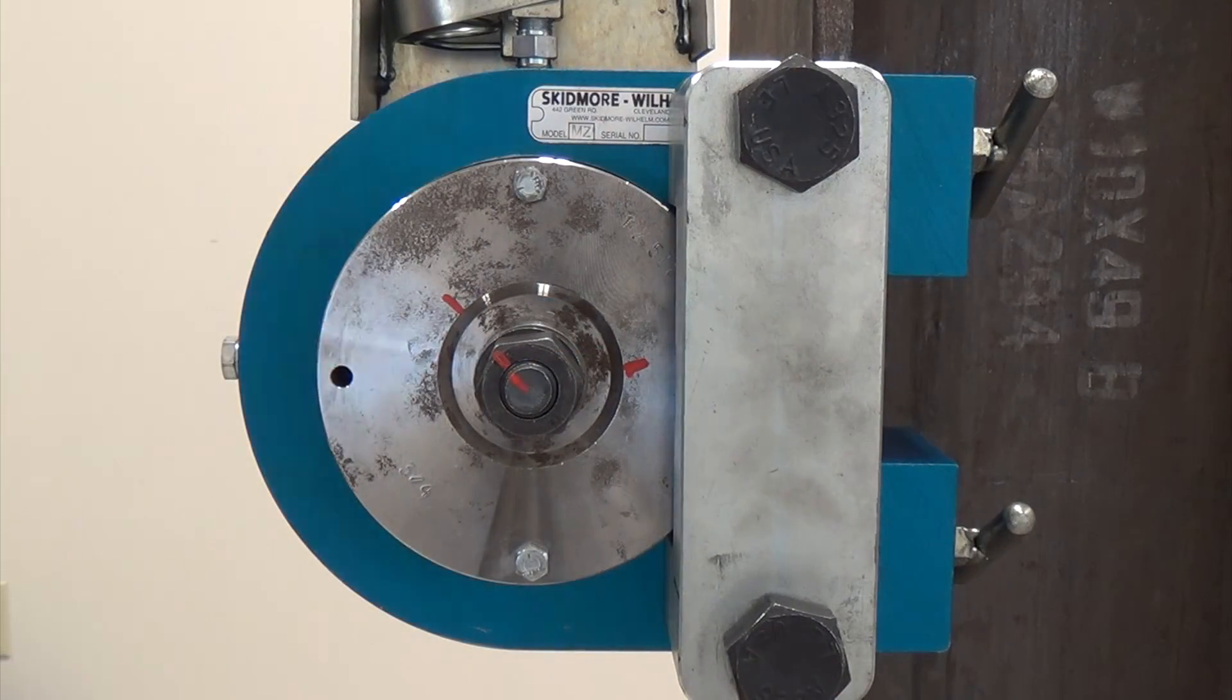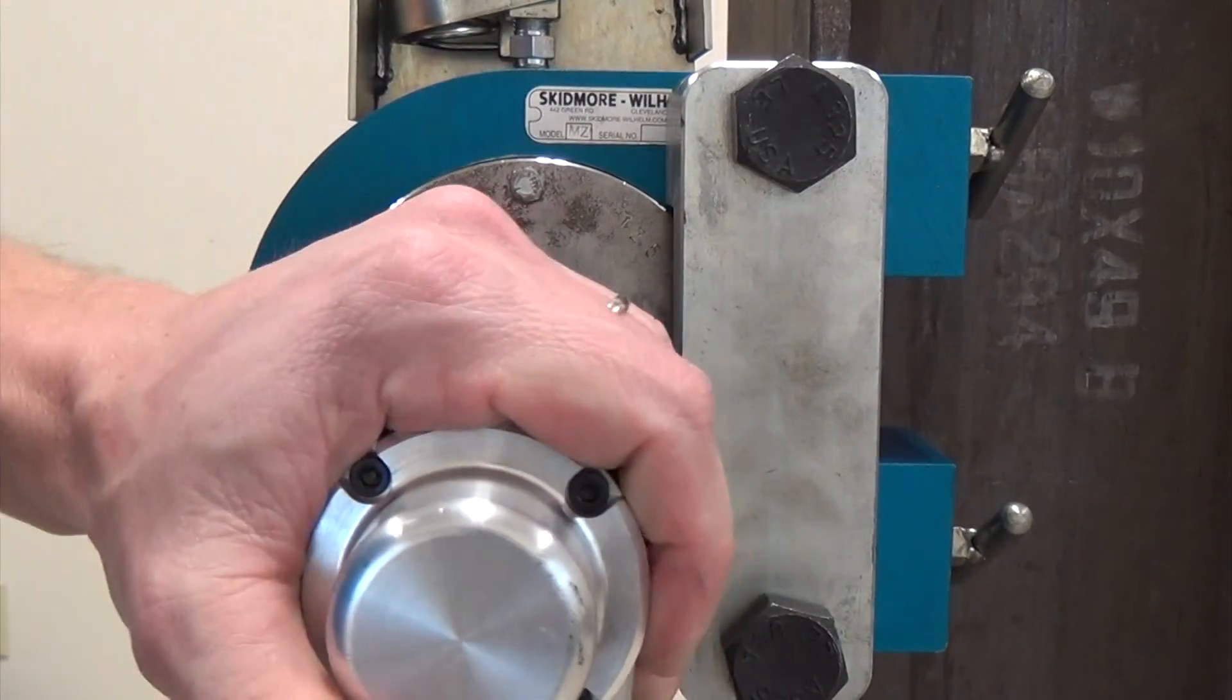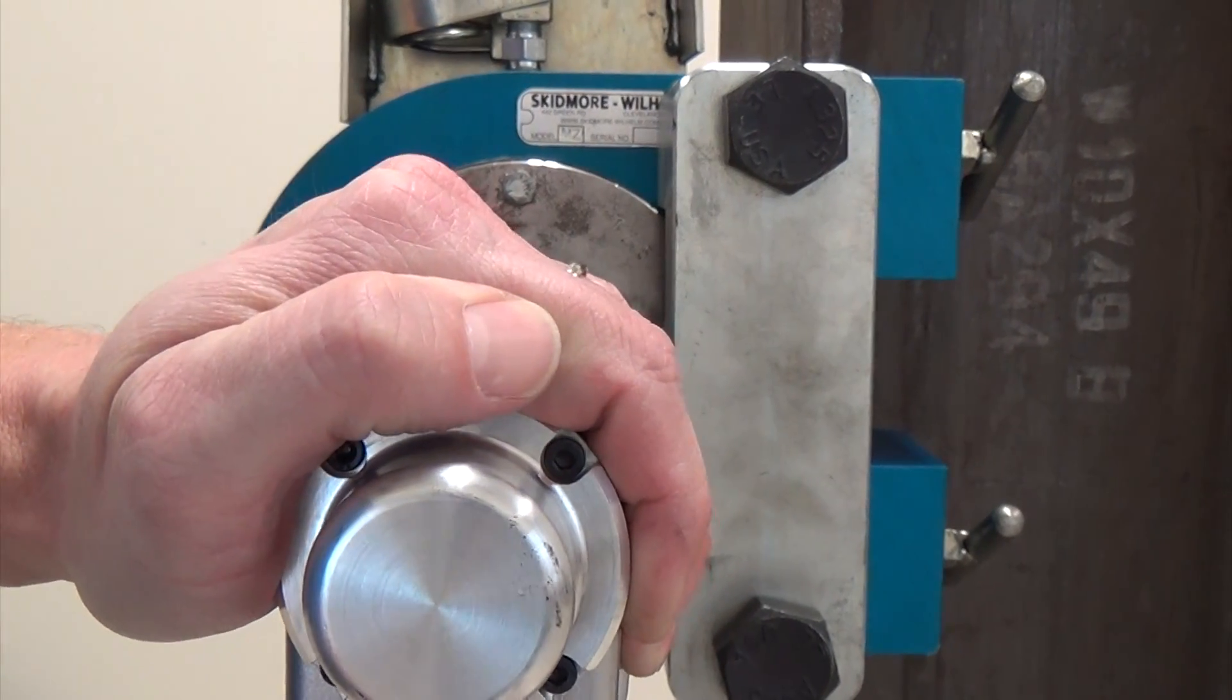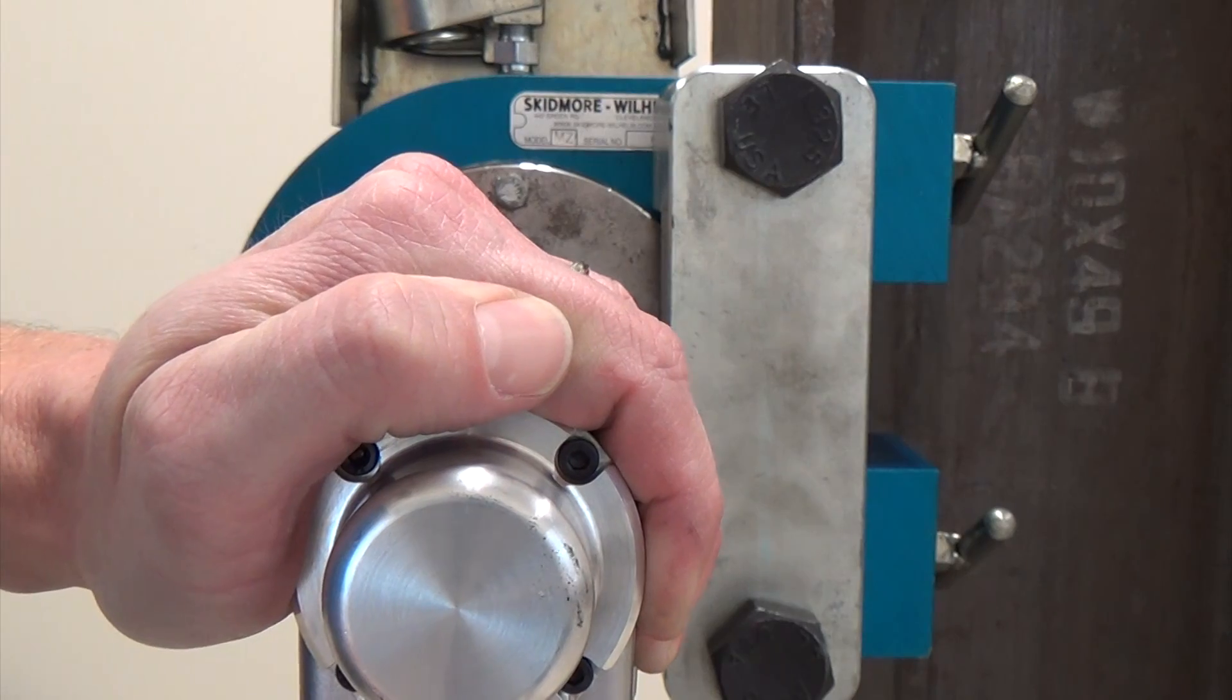When the turn is controlled by the tightening tool, such as the turn of nut gun, it can be executed in one efficient process that can be quickly verified once complete.